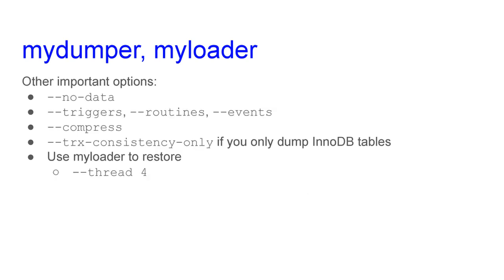MyDumper has options similar to mysqldump and mysqlpump: --no-data, options to include or exclude triggers, routines, and events, and compress the backup. There is also a --trx-consistency-only option when you only back up InnoDB tables, which makes the backup faster. When you want to restore the backup, you can use MyLoader and again use the --threads option to make it multi-threaded and faster.